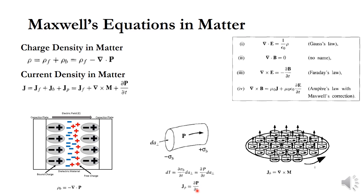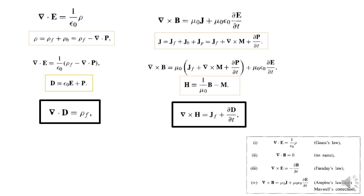So there are three different current density components. Now let's look at how these modify Maxwell's equations inside a material.